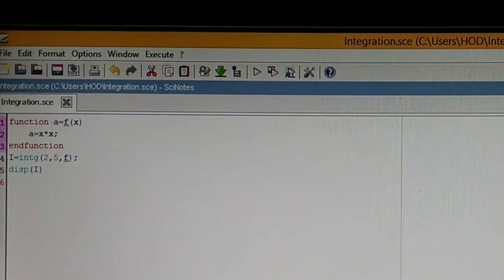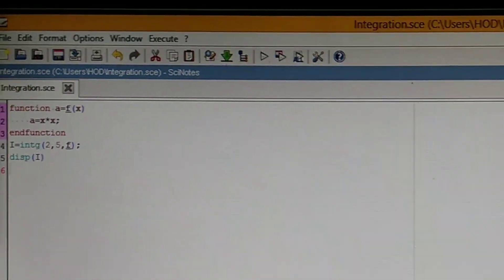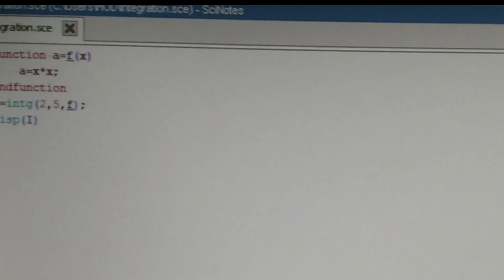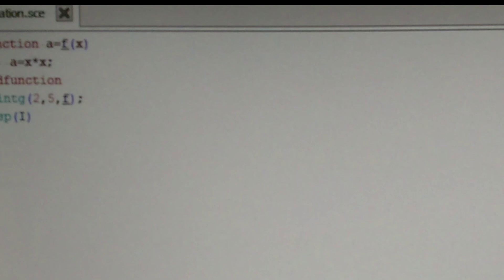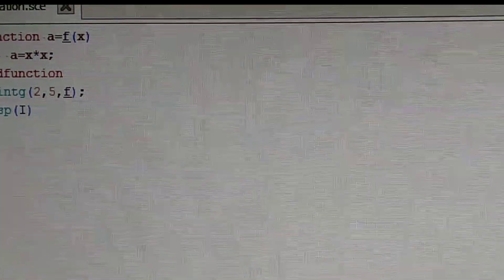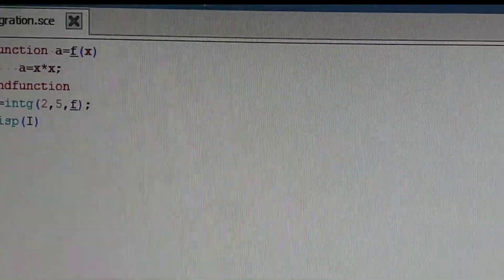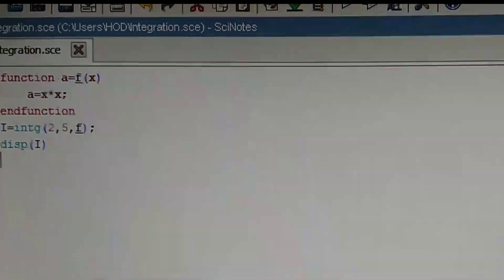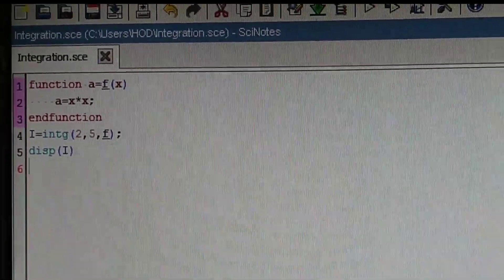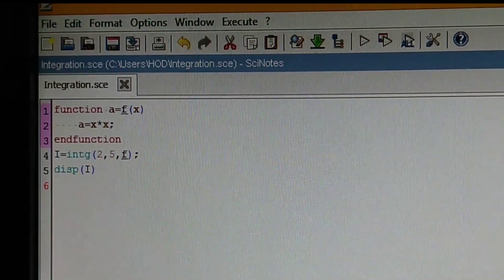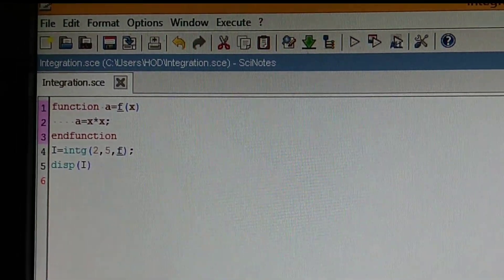Now we will write the coding in Scilab console. You see I have written function a equal to f(x). Instead of c, I have written here a. You may change any name. Then a equal to x asterisk x, then semicolon, then end function. i equal to intg 2, 5, f. Then disp i.